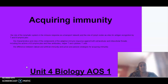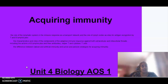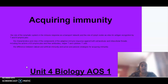Hello everybody and welcome to Unit 4 Biology Area Study 1. Today we are looking at acquiring immunity. This video is going to follow on from the previous video and talk about the third line of defence, which we also call the adaptive immune response. It's also going to go through the lymphatic system and we'll look at natural and artificial immunity as well.